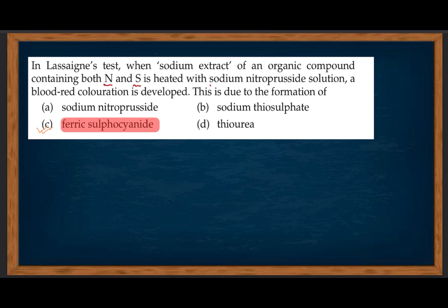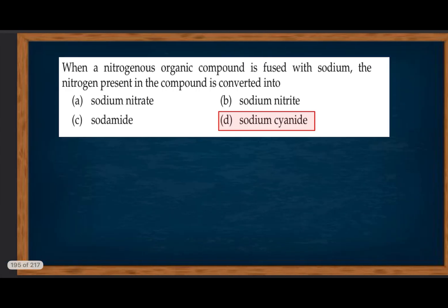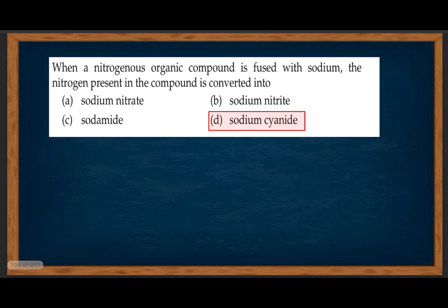In Lassaigne's test, when sodium extract of an organic compound containing both nitrogen and sulfur is treated with sodium nitroprusside solution, blood red coloration is developed. This is due to the formation of ferric sulfocyanide, Fe(SCN)₃.